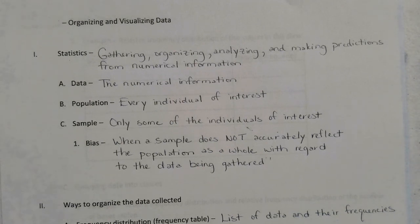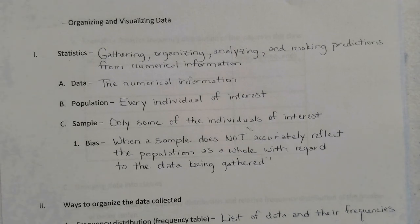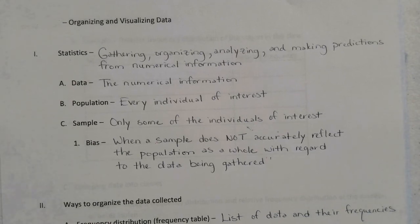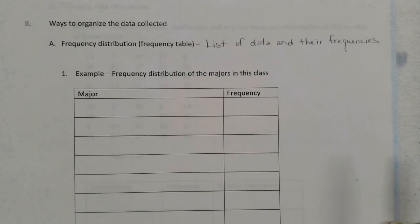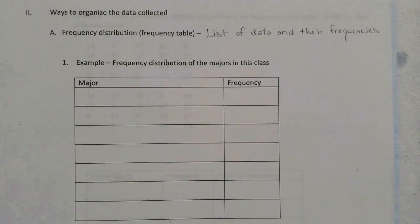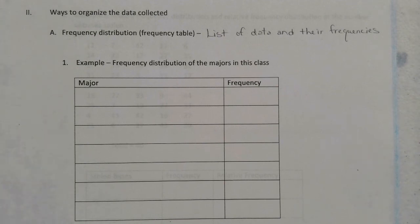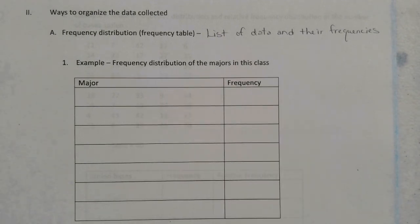So it's very important that when you gather your sample, you do a random sampling — a random sampling of the people or the population that you're interested in. Now that we understand that terminology and how to gather the information, let's take a look at how to organize the information once it has been gathered. There are several ways to organize that data, and one of the ways is what we call a frequency distribution, also called a frequency table.